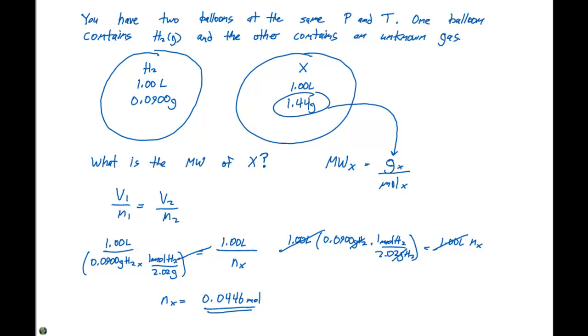We said the molecular weight of X is gonna equal the grams of X, which is 1.44 grams, which was given right up here, divided by 0.0446 moles. If we do that calculation, our molecular weight of X is going to be 32.32 grams per mole.